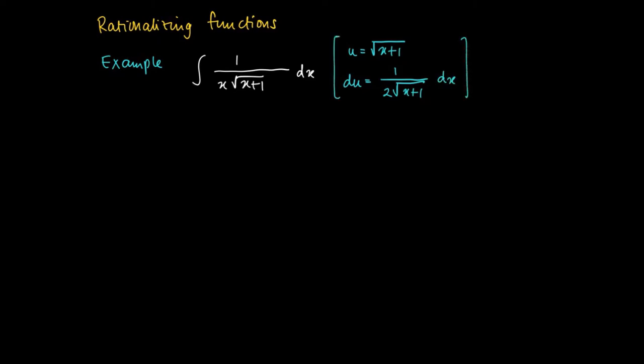So here notice that u squared equals x plus 1, so that x equals u squared minus 1. And this is a term which appears in the integral that we started off with over here.